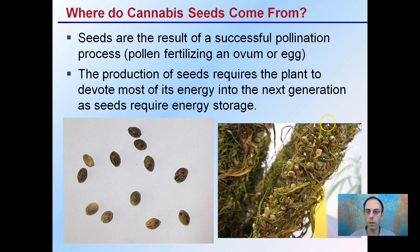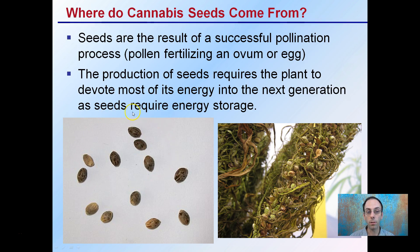So where do cannabis seeds, or hemp seeds, come from? Seeds are the result of successful pollination — that is, pollen fertilizing an ovum or egg — which results in a seed. The production of seeds requires the plant to devote most of its energy to the next generation, as seeds require energy storage, a protective seed coat, and a whole bunch of other things.